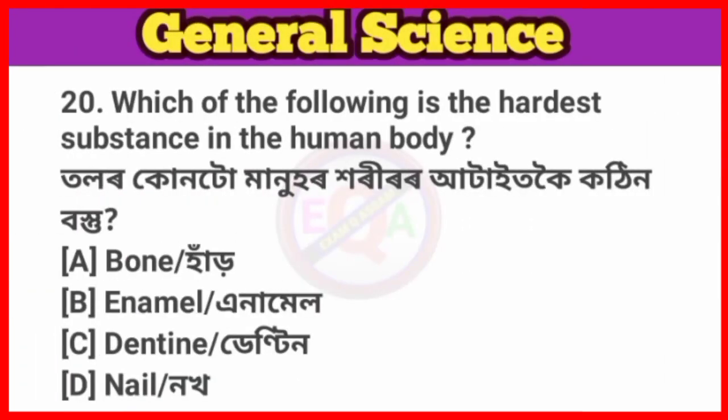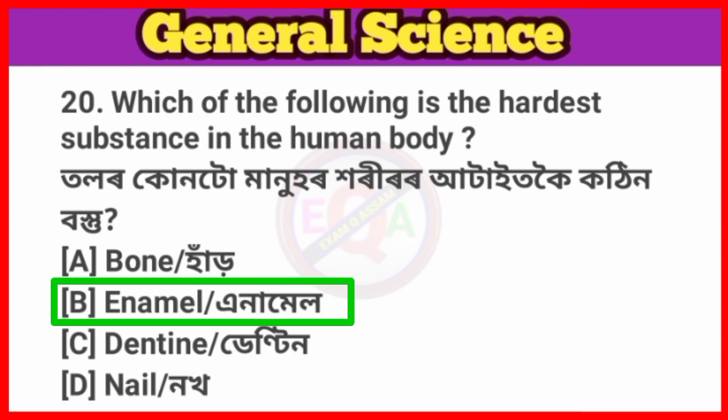Question No. 20. Which of the following is the hardest substance in the human body? Answer: Option B, Enamel. Enamel is the hardest substance in the human body.